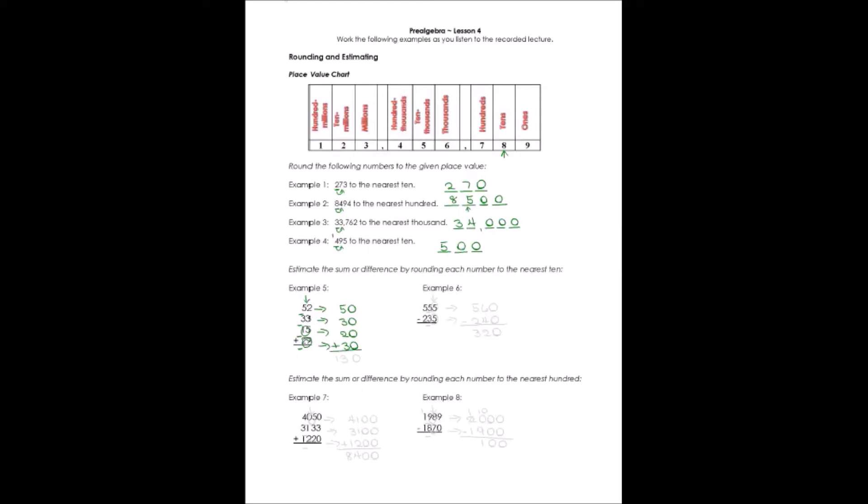Can we add these numbers fairly quickly? Yes, we can. Everything in the ones place is 0. All we have to do is add the tens place. 5 plus 3 is 8. Plus 2 is 10. Plus 3 gives us 13. Our estimated answer, 130.